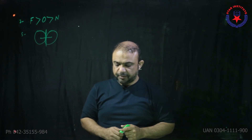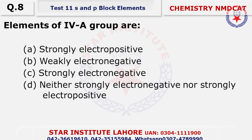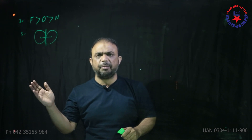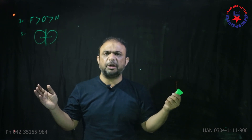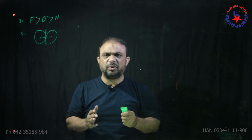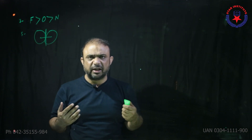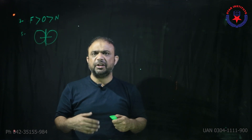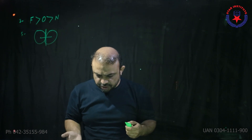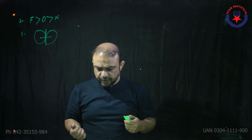Question number 8: Elements of group 4A — group 4A is found in the middle of the periodic table. Left-hand side has metals, right-hand side has non-metals, and in the middle are metalloids. So they are neither strongly metallic nor very strongly non-metallic. So the choice should be D.